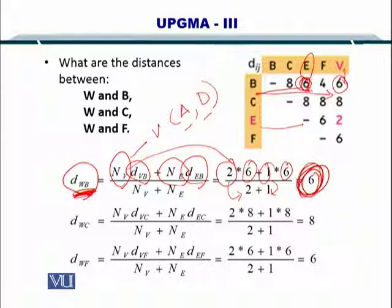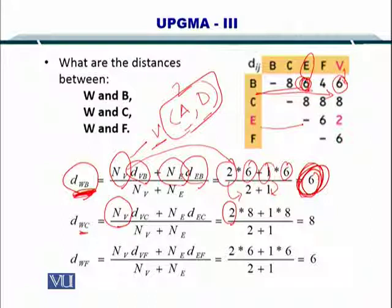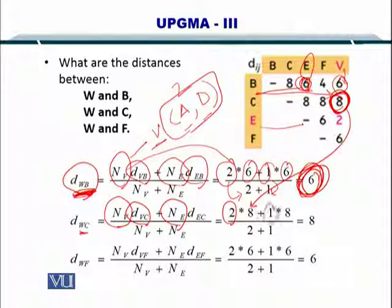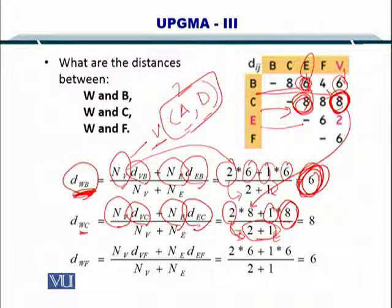So similarly, you compute the distance between W and C. So number of sequences in V are 2. Because you have A and D here. So you have 2. Distance between V and C is 8. So it comes here. The sequences in E are only 1. And the distance between E and C is 8. Of course, you divide it by the sum of the number of sequences in E. So that is 3 in all 2 plus 1. And the distance between W and C comes out to be 8.